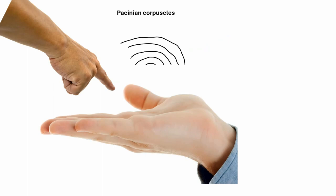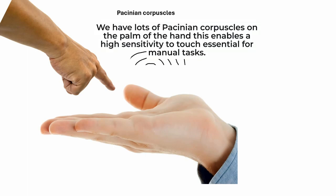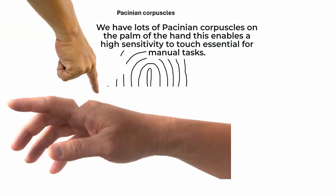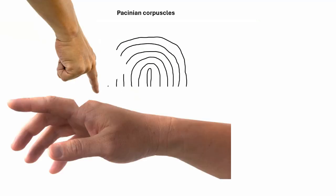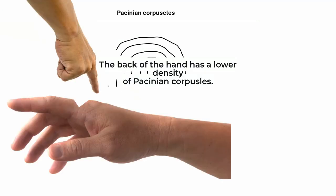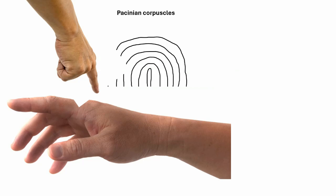We have lots of Pacinian corpuscles on the palm of the hand. This enables a high sensitivity to touch, essential for manual tasks. Try stroking the palm of your hand. The back of the hand has a lower density of Pacinian corpuscles, and you can tell this by stroking the back of your hand.